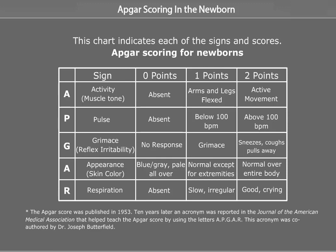The Apgar Score was published in 1953. Ten years later, an acronym was reported in the Journal of the American Medical Association that helped teach the Apgar Score using the letters A, P, G, A, and R. This acronym was co-authored by Dr. Joseph Butterfield.